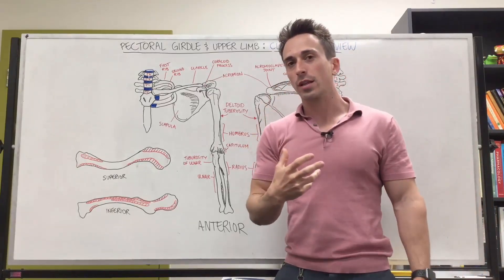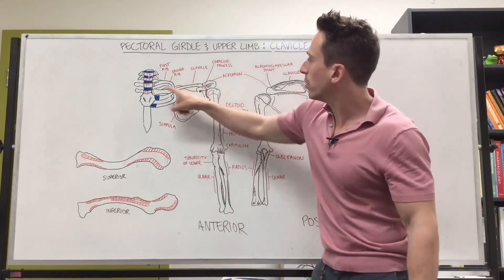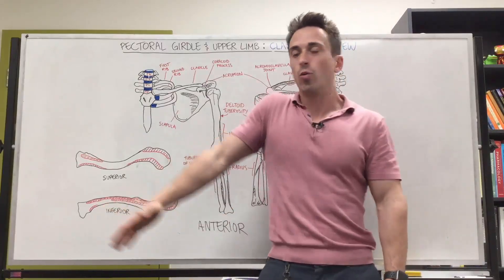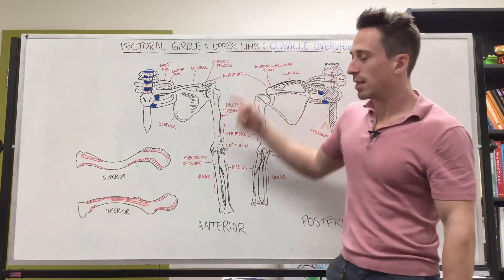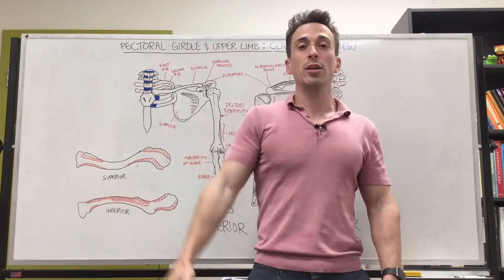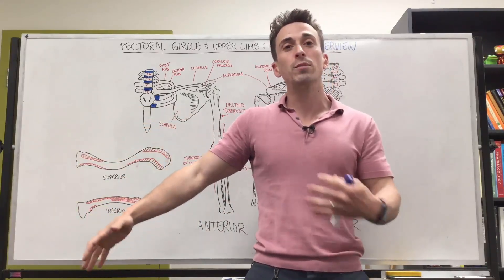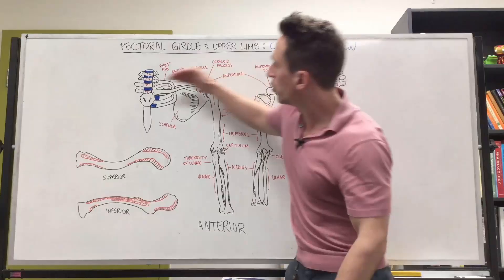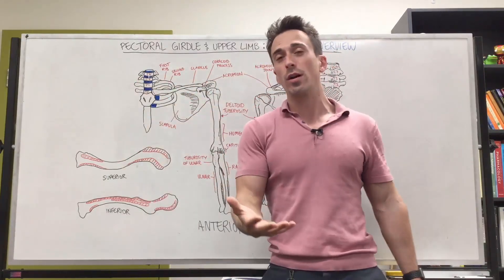Now what is the function of the clavicle? Well, the clavicle can elevate the scapula, which, as you can see, is connected to the arm, and allows the arm to be able to swing clear from the trunk. It also transmits some of this weight to the axial skeleton, which is quite important.